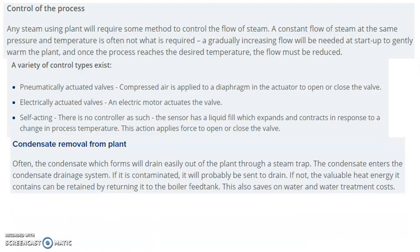Next is condensate removal from the plant. Often the condensate which forms will drain easily out of the plant through the steam trap, and the condensate enters the condensate drainage system. If it is contaminated, it will probably be sent to drain. If not, the valuable heat energy it contains can be retained by returning it to the boiler feed tank. This also saves water and water treatment costs.